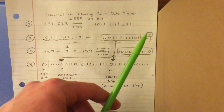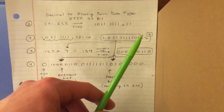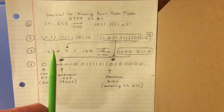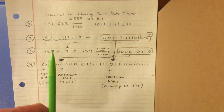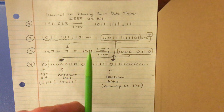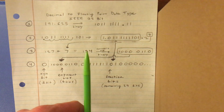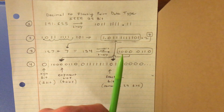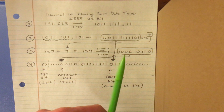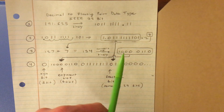Take this number seven, or whatever number you come up with, and add the number 127 to it. It'll be the number 127 every time, and this will give you a new number. In this case, 134. Convert 134 to binary, and you have completed the exponent part of the notation.